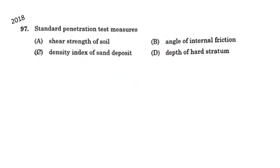Next question: Standard Penetration Test measures. The Standard Penetration Test is an in-situ penetrometer test carried out in a borehole. The main purpose of the test is to provide the relative density of granular deposits such as sands and gravels. So the answer is option C: density index of sand deposit.